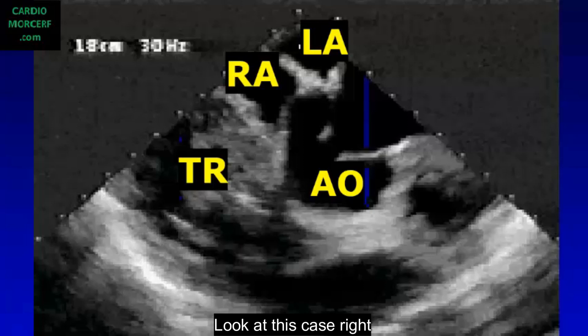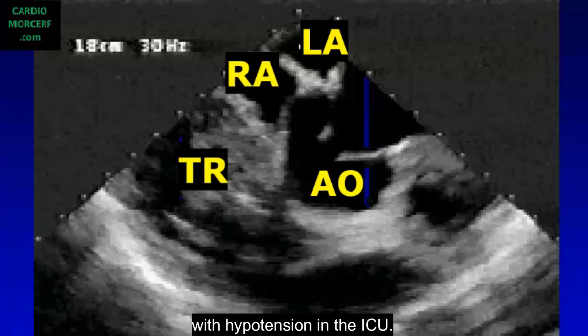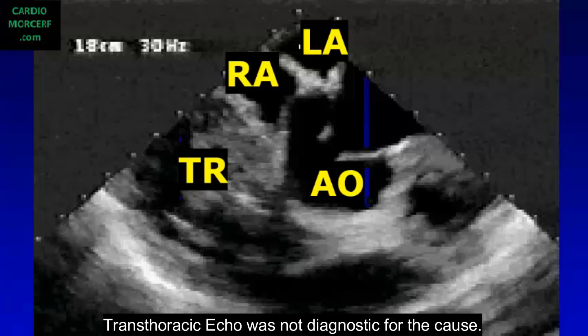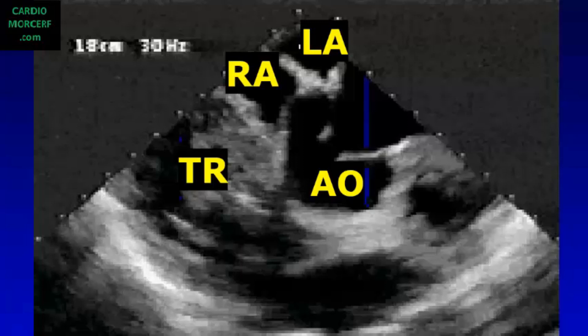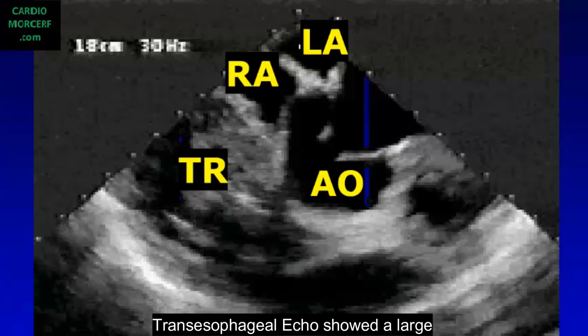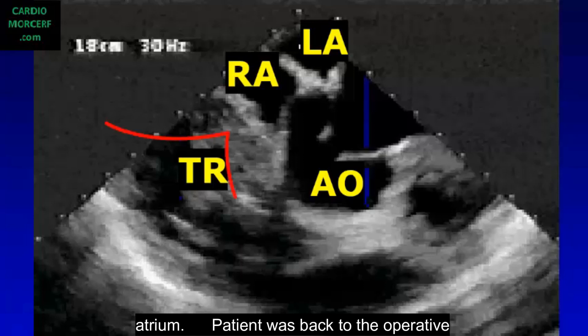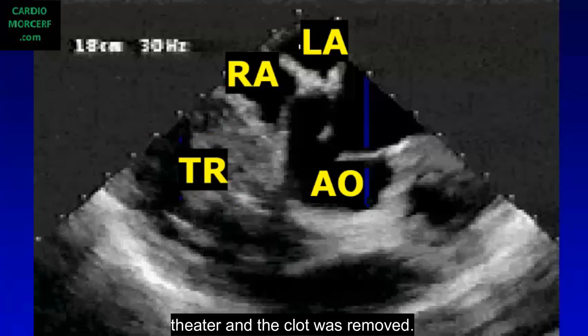Look at this case: a right post-operative revascularization patient with hypotension in the ICU. Transthoracic echo was not diagnostic for the cause. Transesophageal echo showed a large intrapericardial clot pressing the right atrium. The patient was returned to the operative theater and the clot was removed.